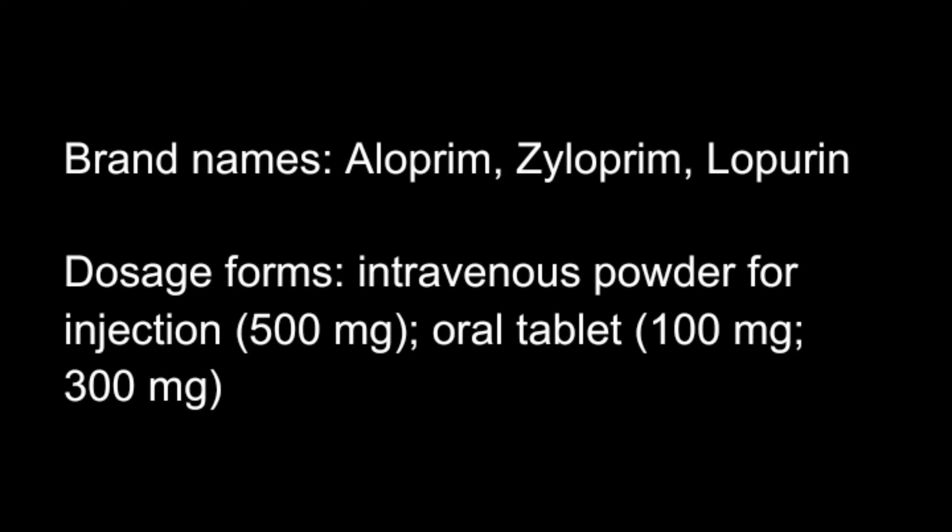Brand names of allopurinol drug are Aloprim, Xyloprim, and Luprim. Dosage forms include intravenous 500 mg, and oral dosage forms as tablets of 100 mg and 300 mg.